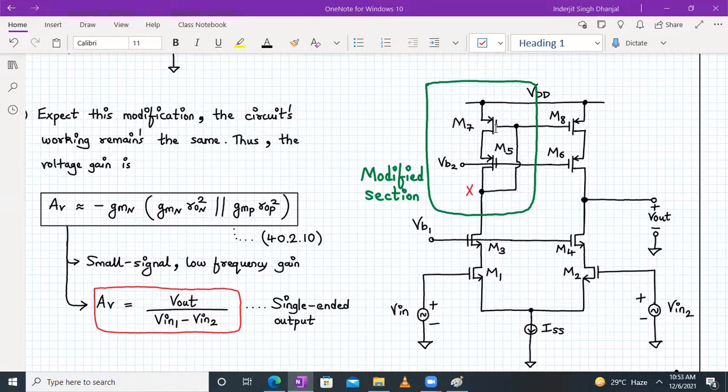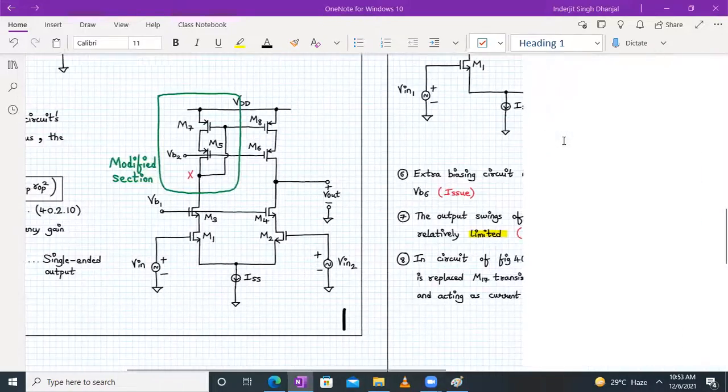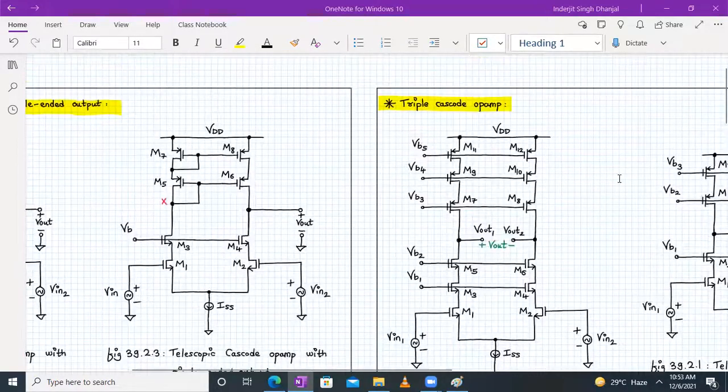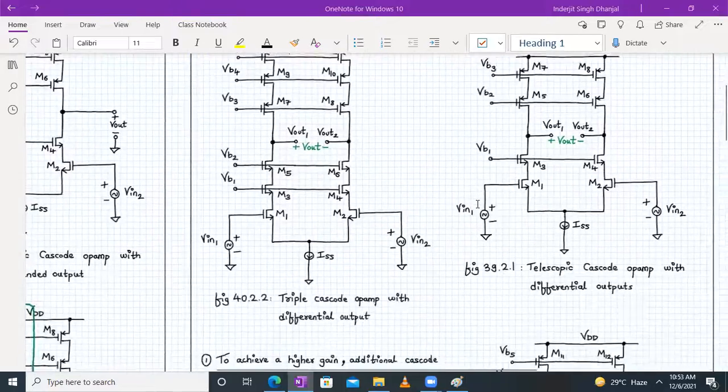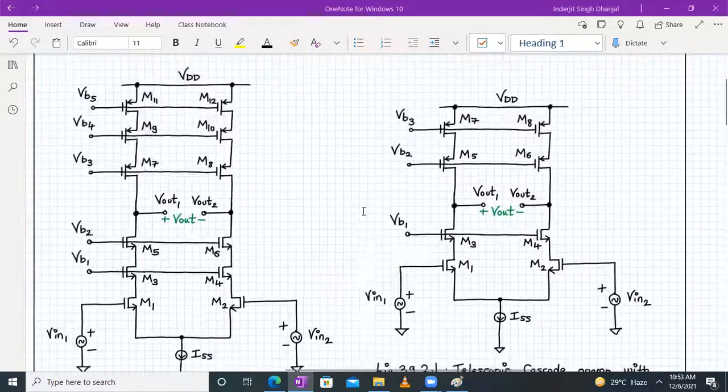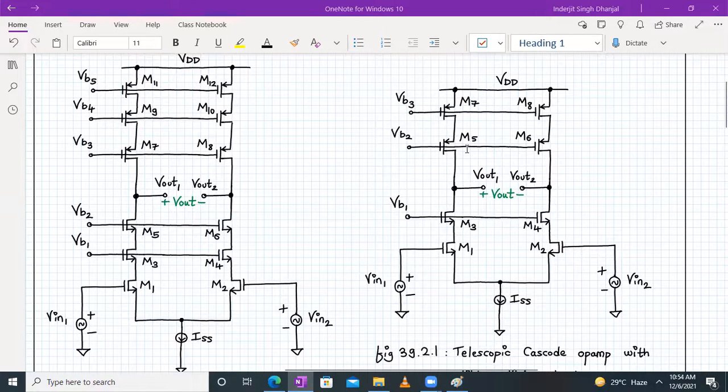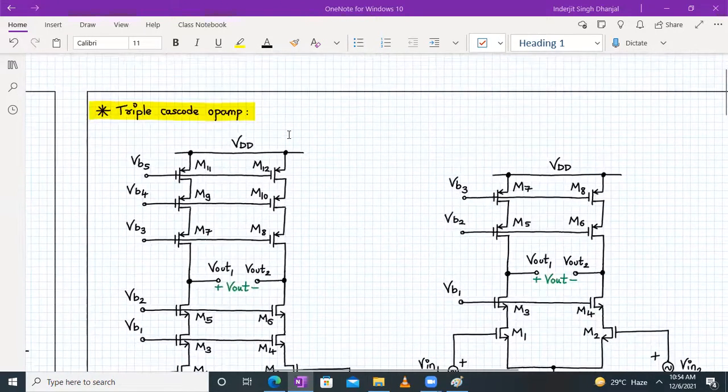This modification will save one threshold voltage value from the output swing. That's the advantage. Now let's move on to the triple cascode op-amp. In the earlier one, this was a telescopic cascode op-amp with differential output.